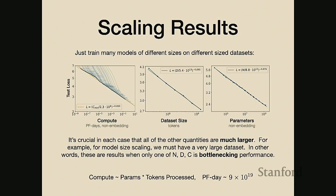It's crucial that in each of these experiments you're only limiting performance with one thing at a time. On the far right, there's plenty of data and compute but limited parameters. In the middle, you're limiting data but have a big model. On the left, you're looking at training compute with all sorts of different model sizes and plenty of data. In each case, one parameter is bottlenecking performance while otherwise you have plenty of resources.